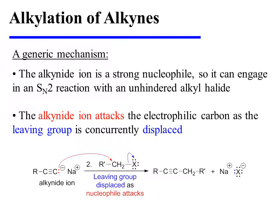The alkynide ion is a strong nucleophile, and so it can engage in an SN2 reaction with an unhindered alkyl halide. As the alkynide ion attacks the electrophilic carbon, the leaving group is concurrently displaced, and a new carbon-carbon bond is formed as a consequence.